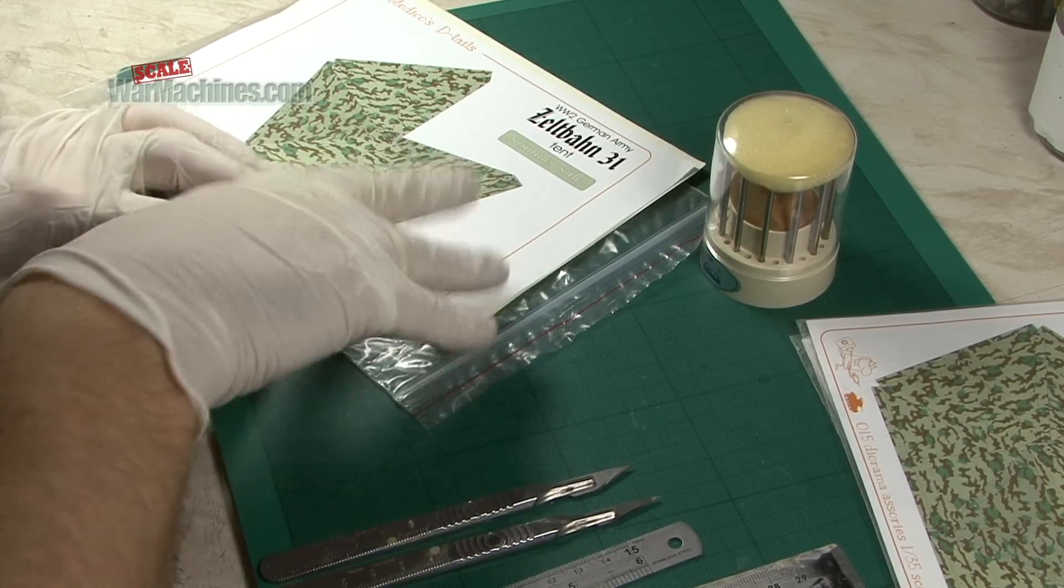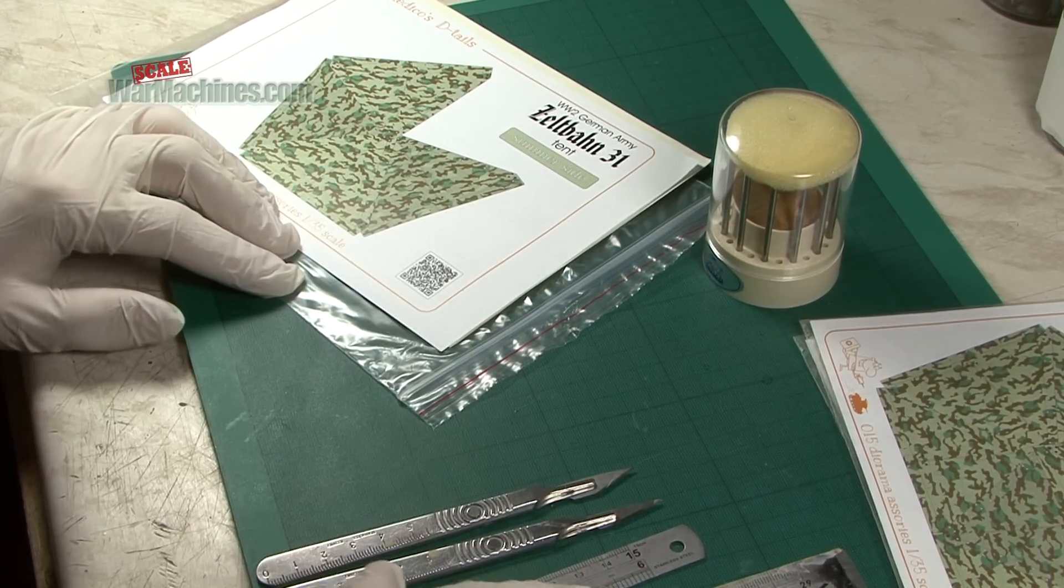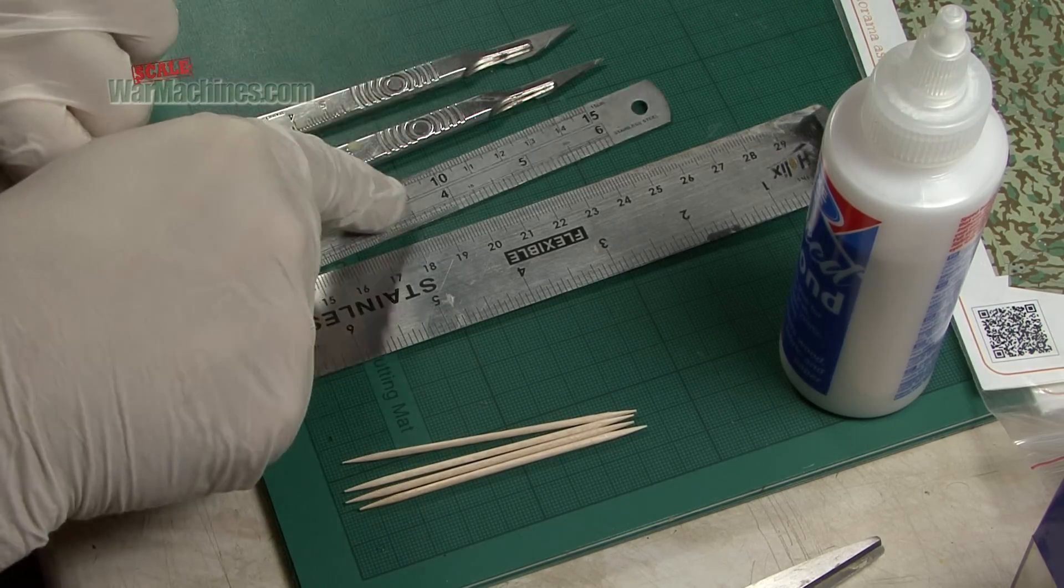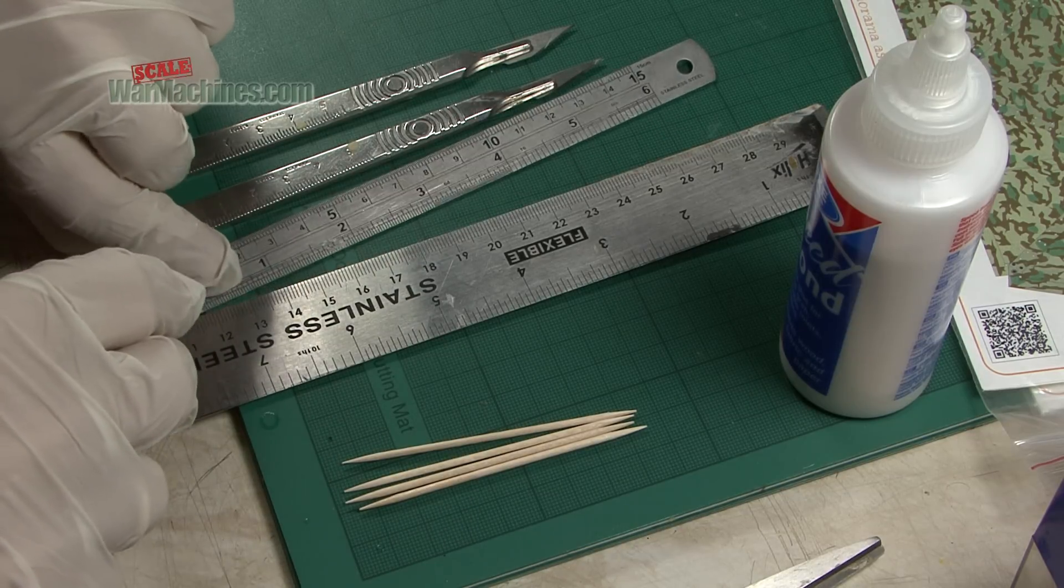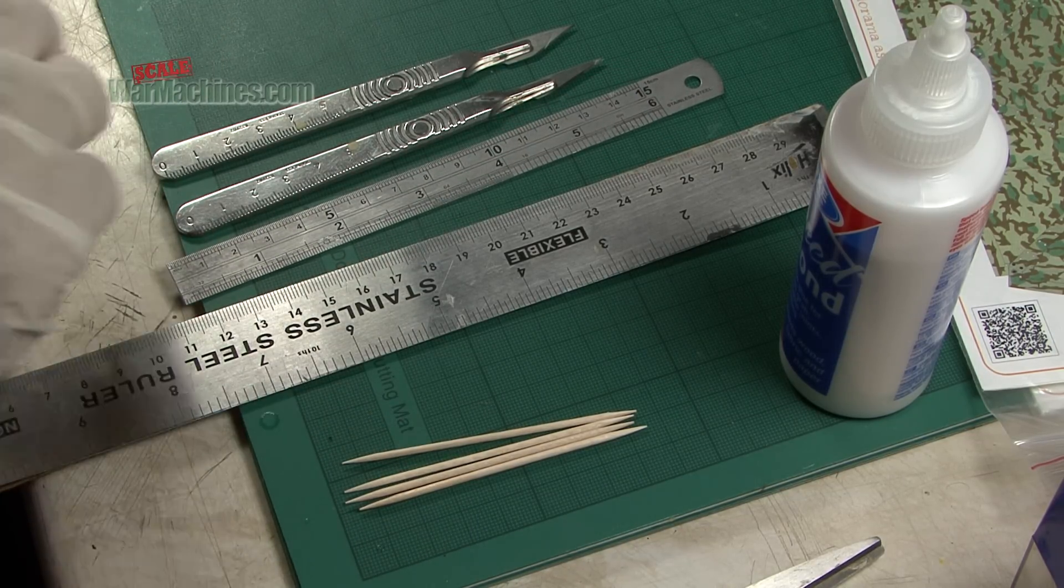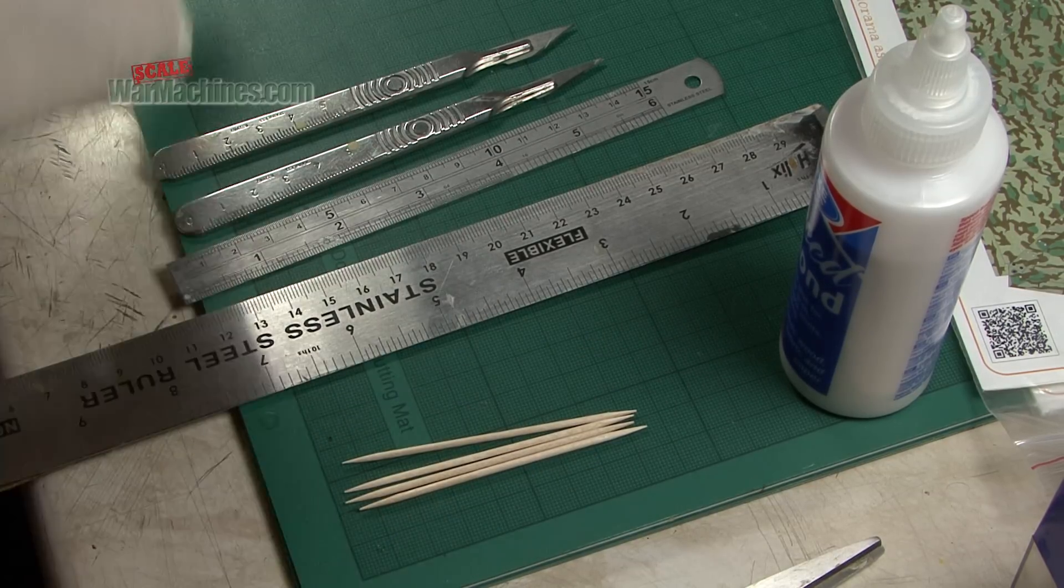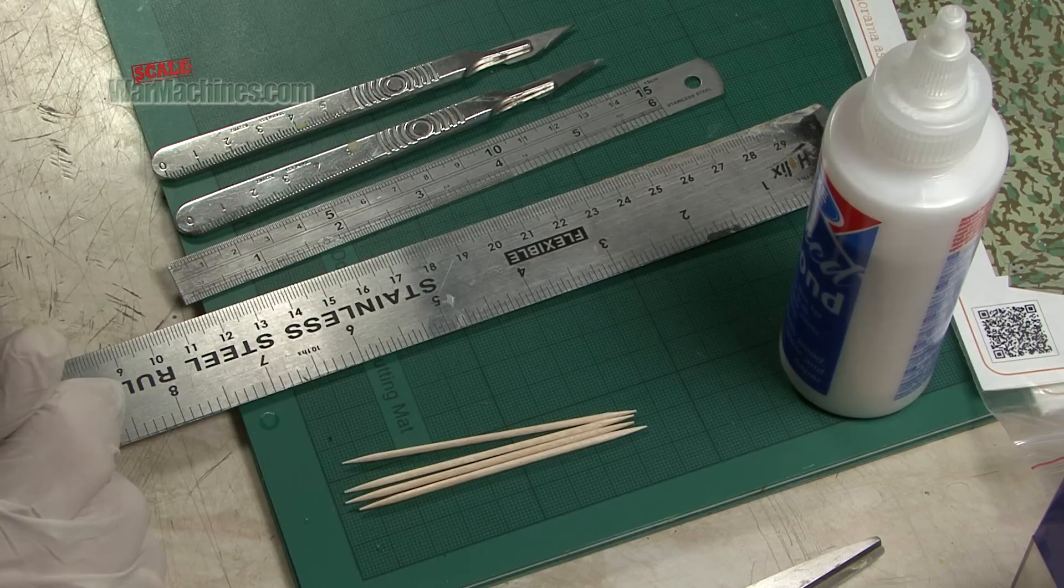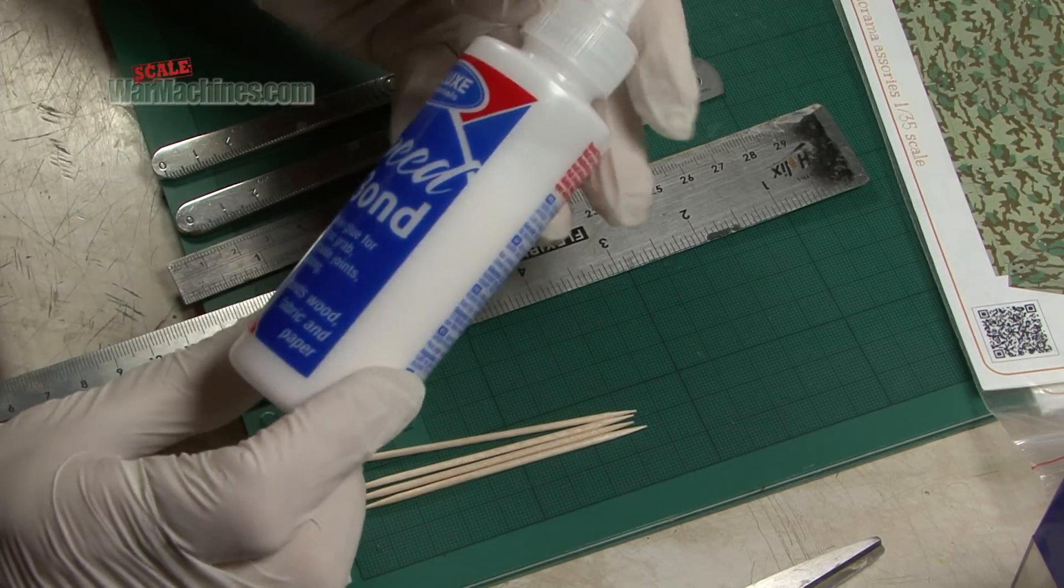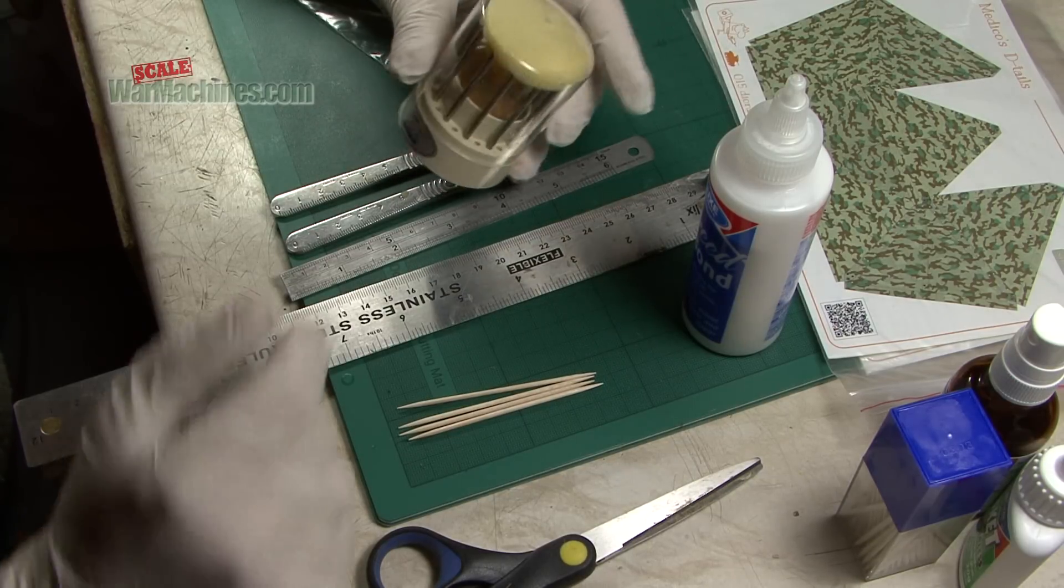In order to construct any of these you're going to need the following tools. A sharp scalpel or scalpels along with a ruler for a straight edge. And here you can see some toothpicks. They can be used according to the instructions to make the particular shape of the tent to help you during construction. In addition you'll need some glue and a punch will be useful as well.